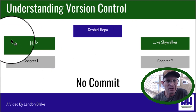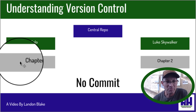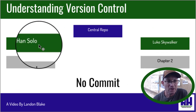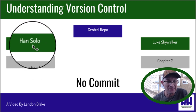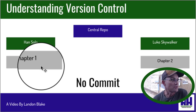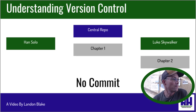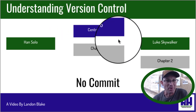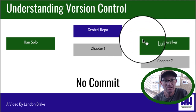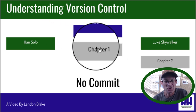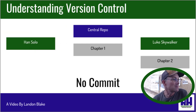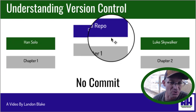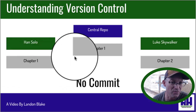Chapter one is sitting on Han Solo's local copy of the repository, but he hasn't committed any changes yet, and neither has Luke. These files are just local to their computers. But at some point, in order for this to be useful, you've got to get the files you're working on back into the central repo. Han wants to commit chapter one so that Luke can read it, review it, and edit it if he needs to. So Han commits chapter one to the repo. After Han makes his commit, chapter one now lives in the central repository — and it's still on his local computer. These two versions are now identical.